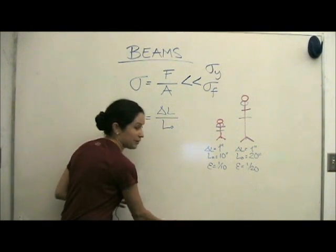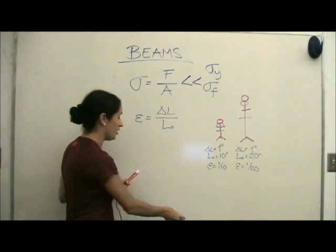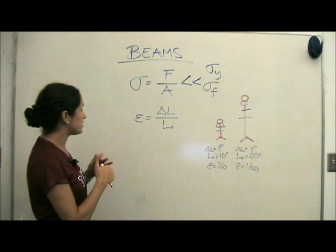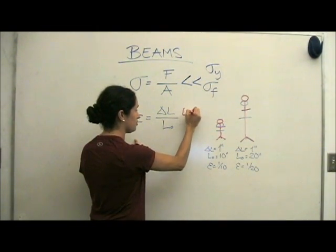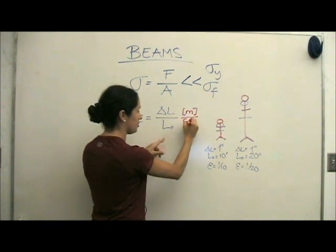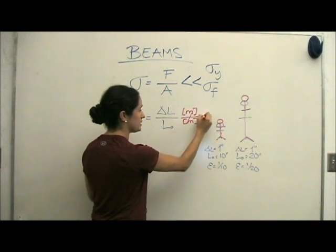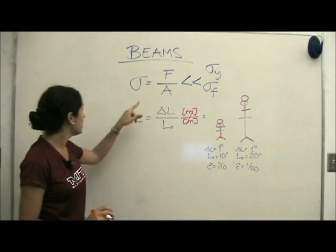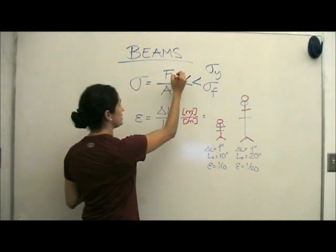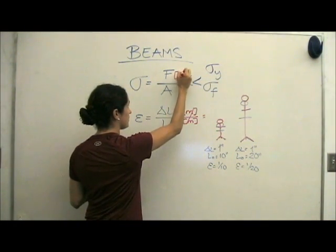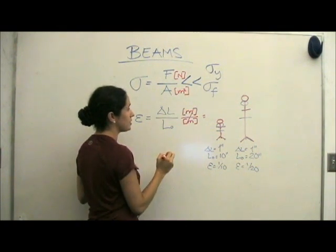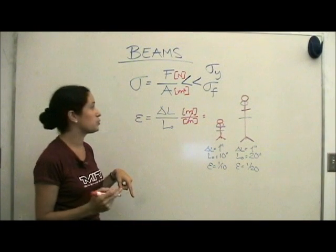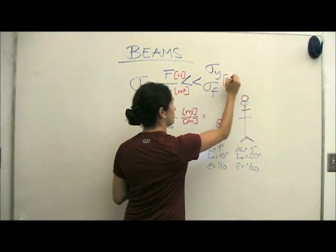Before we move any farther, I want to make sure that we understand the units of these two. The strain is actually unitless, because if we think about the units, the change of length will be measured in meters, and the original length would also be measured in meters, so it is a unitless measure. Whereas the stress, force, is measured in newtons, and area is measured in meters squared. That gives us newtons per meter squared, which we call pascals.